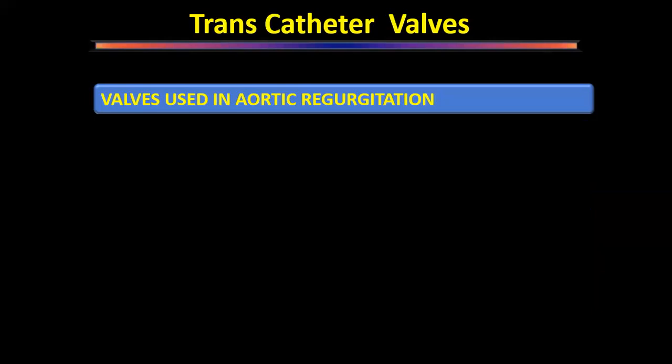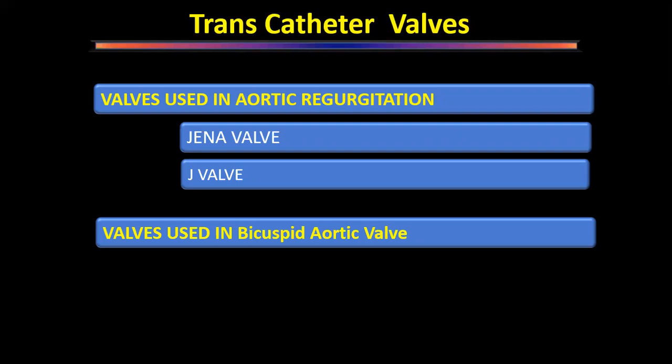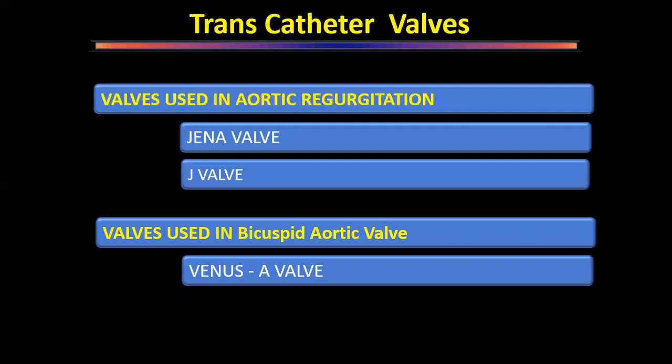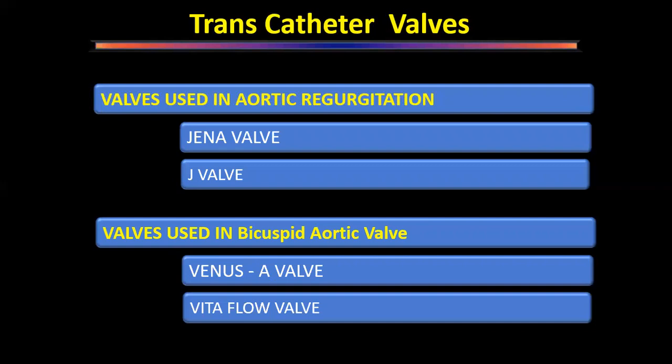Aortic regurgitation is a relative contraindication for TAVI because adequate sealing is difficult. However, two valves can be used for aortic regurgitation: the J-Valve and Jena Valve — both allow clips to fix the valve mechanism to the aortic cusps after deployment. These can be used in mild aortic regurgitation but are not yet in formal guidelines. For bicuspid aortic valves, the Venus valve and Vita Flow valve have been studied — 'J for Jena/J-Valve, V for Venus/Vita Flow.'